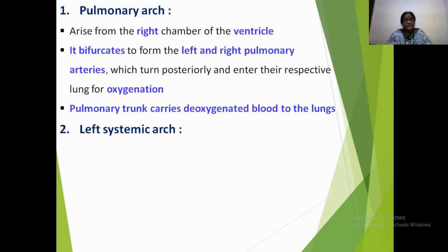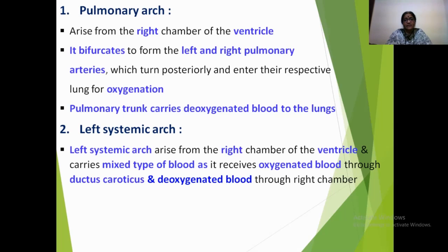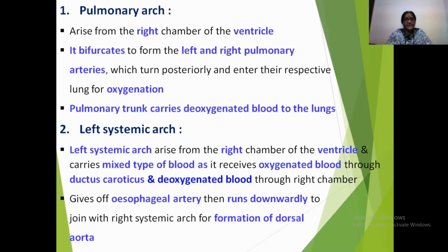The left systemic arch arises from the anterior dorsal border of the ventricle and carries mixed blood, as it receives oxygenated blood through the ductus caroticus and deoxygenated blood through the right chamber. The left systemic arch gives off the esophageal artery and then runs downwardly to join with the right systemic arch for formation of the dorsal aorta.